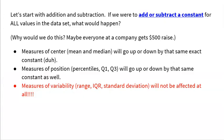First we understand there's a couple different ways you can transform your data. Here's our first example. Let's start with addition and subtraction. If we were to add or subtract a constant for all values in the data set. Maybe we have a data set of a bunch of test scores and we're going to give everybody five bonus points. Or maybe we weighed everybody and the scale was off by five pounds. We got to subtract five from everybody's weights. Another example is maybe everybody in a company gets a $500 raise, so everybody's salary goes up 500.